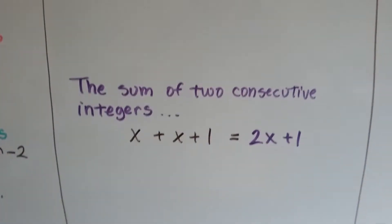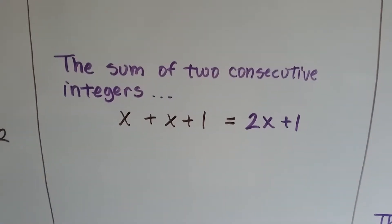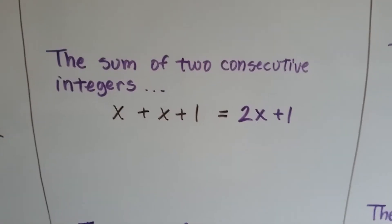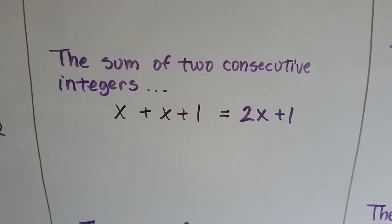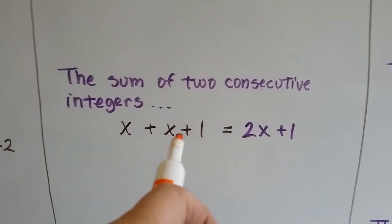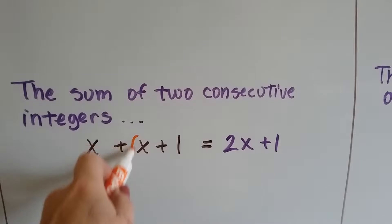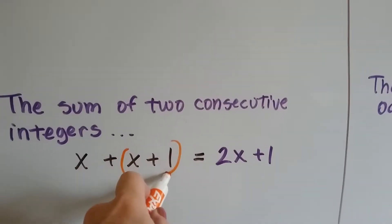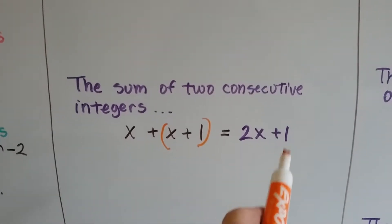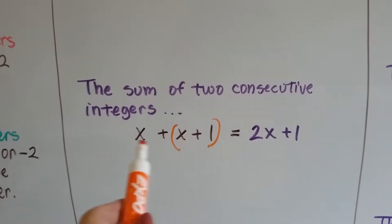If it said the sum of two consecutive integers, we know that x could be the first integer and x plus 1 could be the second integer. That would give us 2x plus 1 because we would combine the like terms.